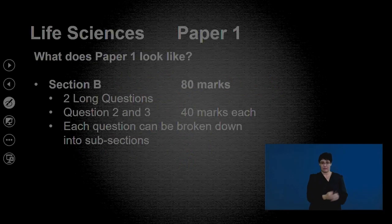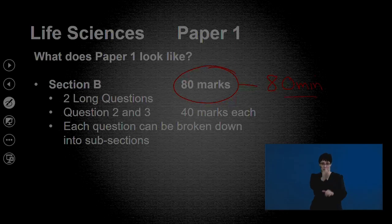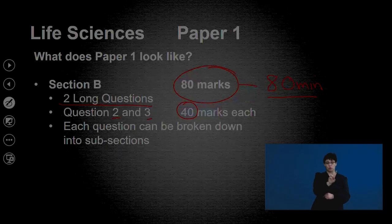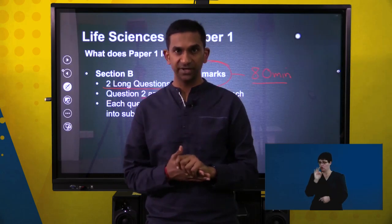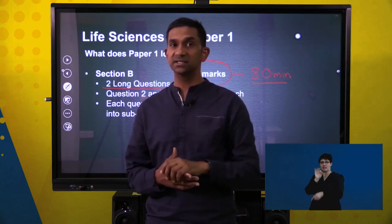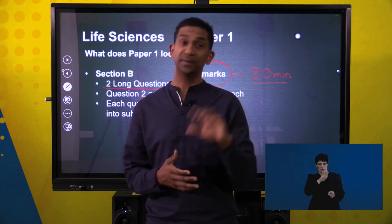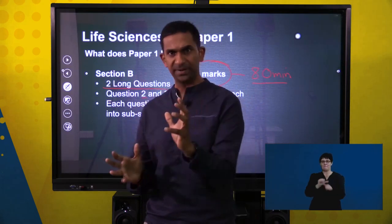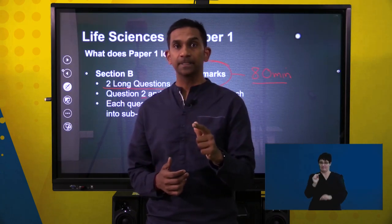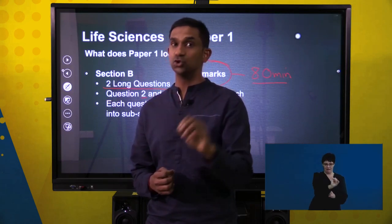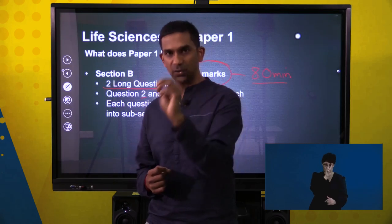Section B consists of 80 marks and should take approximately 80 minutes. It's broken into two long questions — Questions 2 and 3 — at 40 marks each, paced at 40 minutes each. You do not have to start with Question 2 first; you can start with Question 3 if you're more comfortable with that section. Just remember to number your questions exactly as they appear in the exam paper.